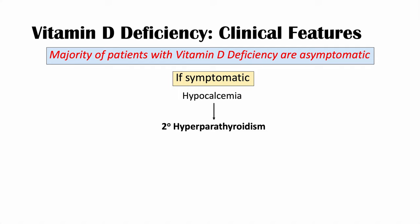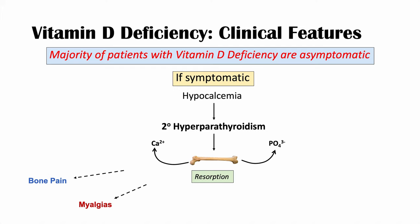Secondary hyperparathyroidism — this increase in parathyroid hormone — leads to the reabsorption of calcium and phosphate from the bone. Parathyroid hormone helps to dissolve bone and release calcium and phosphate. Because the body is low in calcium, parathyroid hormone goes to the bone and releases calcium, causing bone resorption. This results in bone pain, myalgias (muscle aches), arthralgias (joint aches), fasciculations (muscle twitching), and weakness.